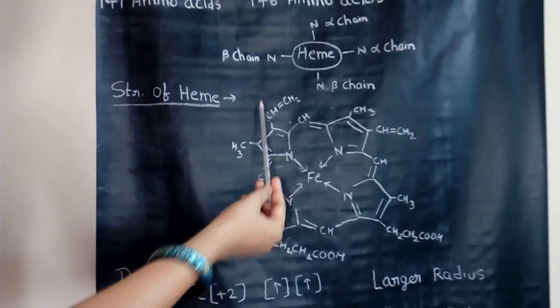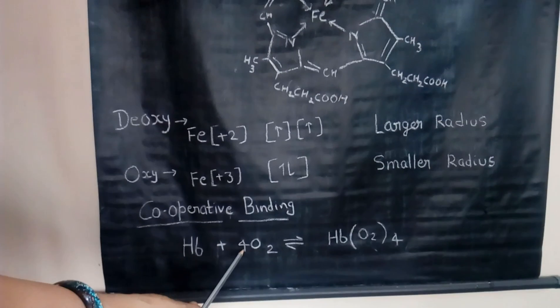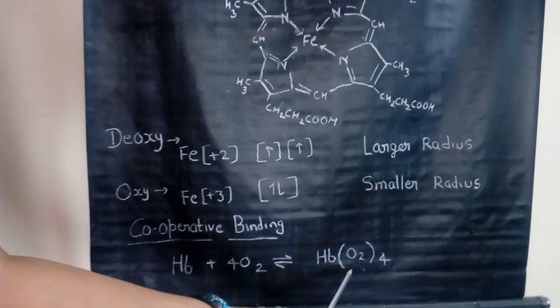So we see a type of cooperative bonding. It means in one time, one hemoglobin molecule binds to four oxygen molecules and forms oxyhemoglobin. Thank you for seeing this.